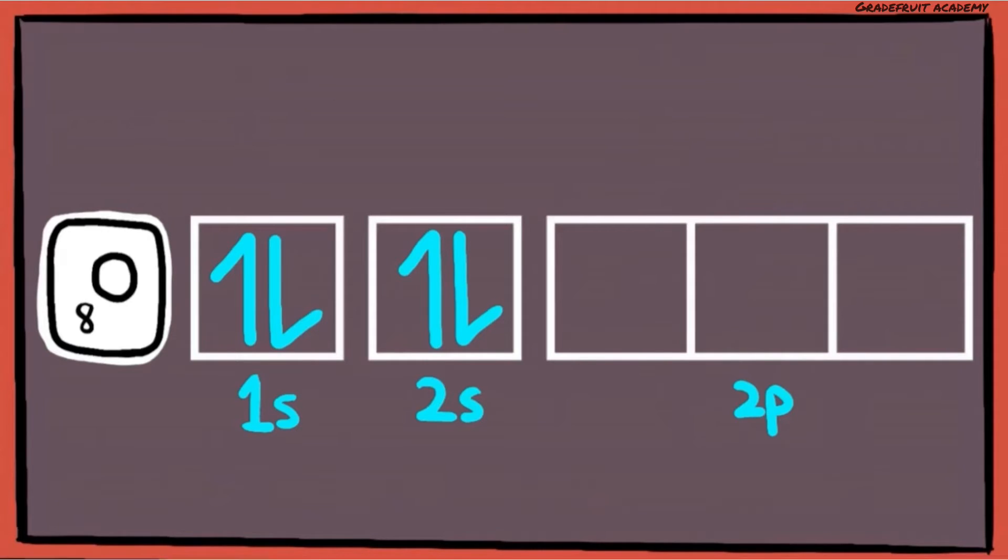At this stage, we have already filled up 4 electrons, so we have 4 electrons left to fill up in the 2p subshell. To do that, we fill it in like this: 1, 2, 3. And the last one goes back to the first 2p orbital where there can finally be electron pairing.